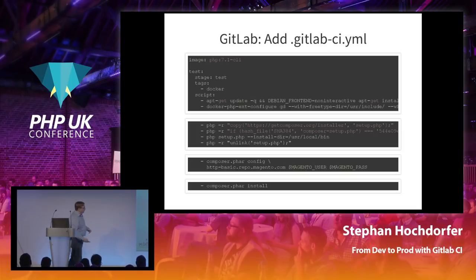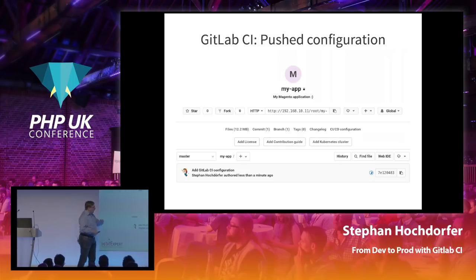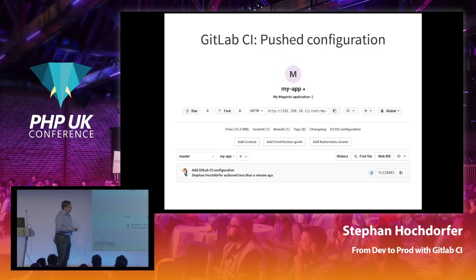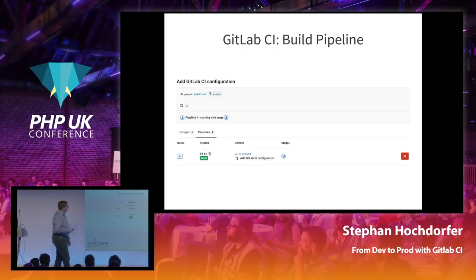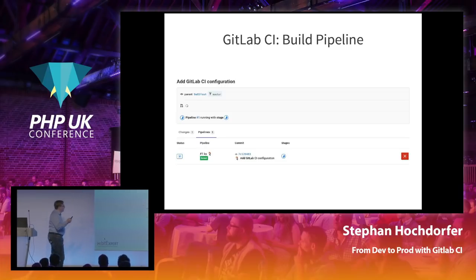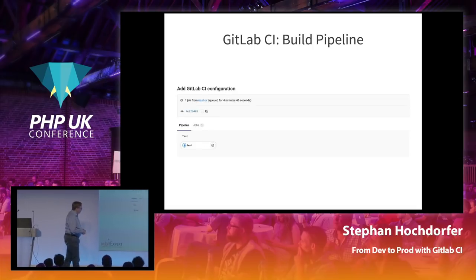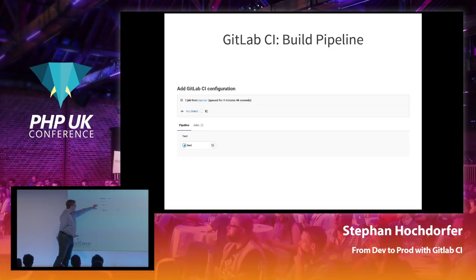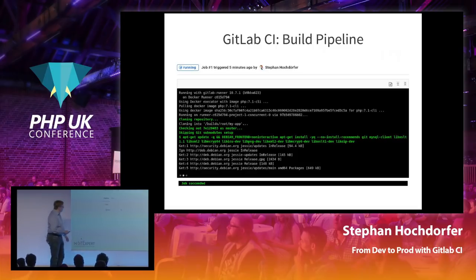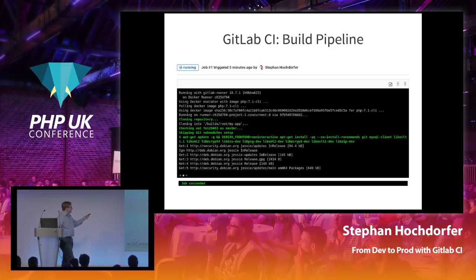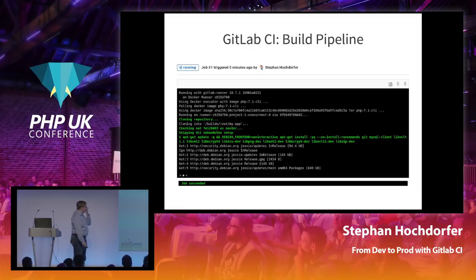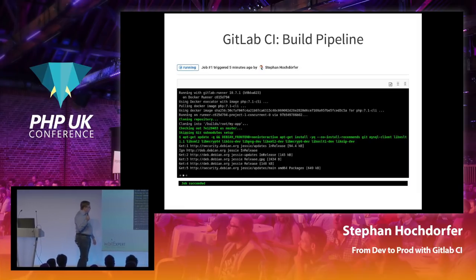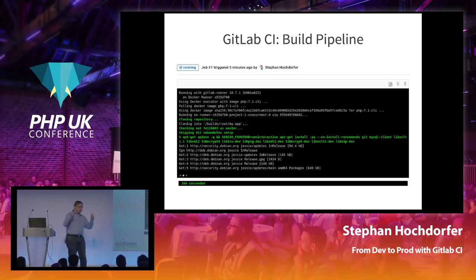Now, how do we get things up and running? It's super simple — just add a file called '.gitlab-ci.yml' in the root of your repository. If you're familiar with Travis, it looks similar but differs in detail. On the first line we define the default image — PHP 7.1 CLI. Magento can't run with 7.3 right now. We then define a test job that runs in a test stage, tagged with 'docker.' The scripts list the steps to execute: installing Debian packages needed to compile PHP extensions that Magento requires, then installing Composer and running 'composer install.' Add, commit, push the file — a blue icon appears on the commit indicating a build job is running.